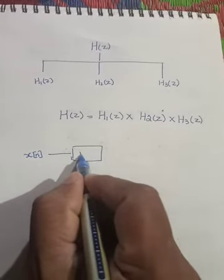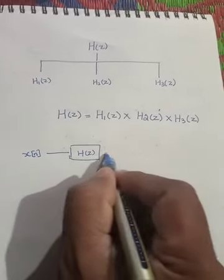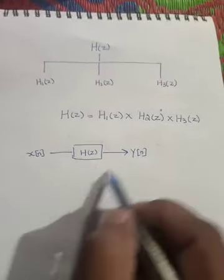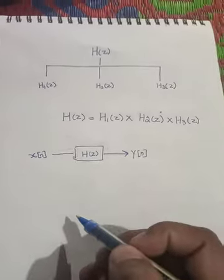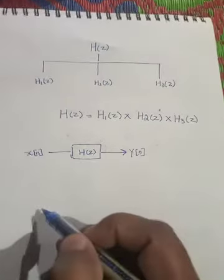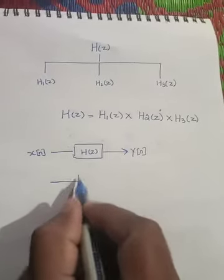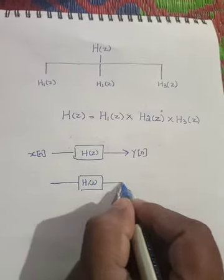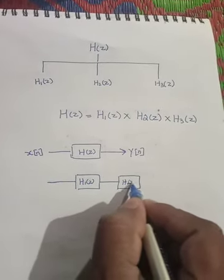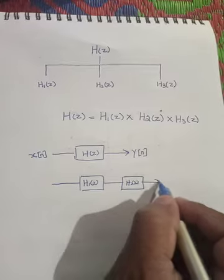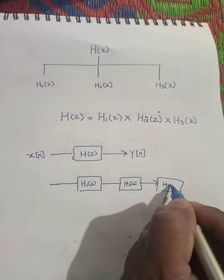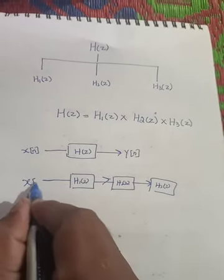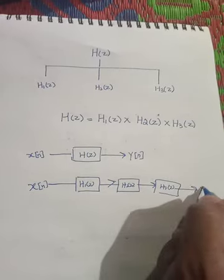So our system has input X of Z and transfer function H of Z, and output Y of Z. Because this system was complicated, I have divided this system into H1 of Z, H2 of Z, H3 of Z, with input X of N and output Y of N.